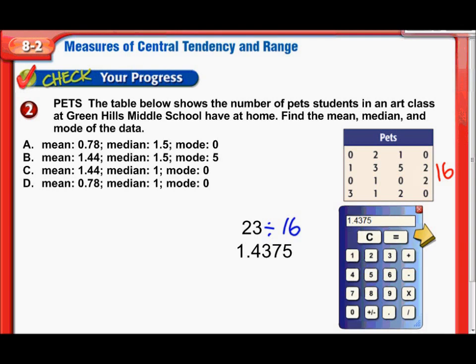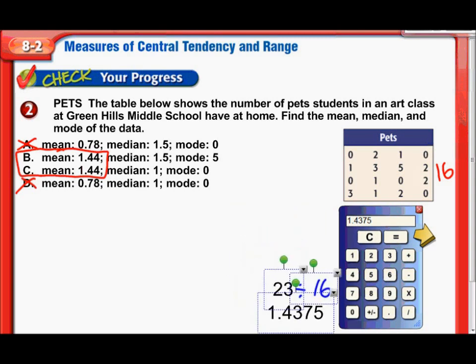What that means is it's definitely not D and it's definitely not A because our mean does round to 1.44. So far either one of these look good because they both have the right mean. So now it's time to figure out the median. Maybe that'll help us figure out the rest of this answer.